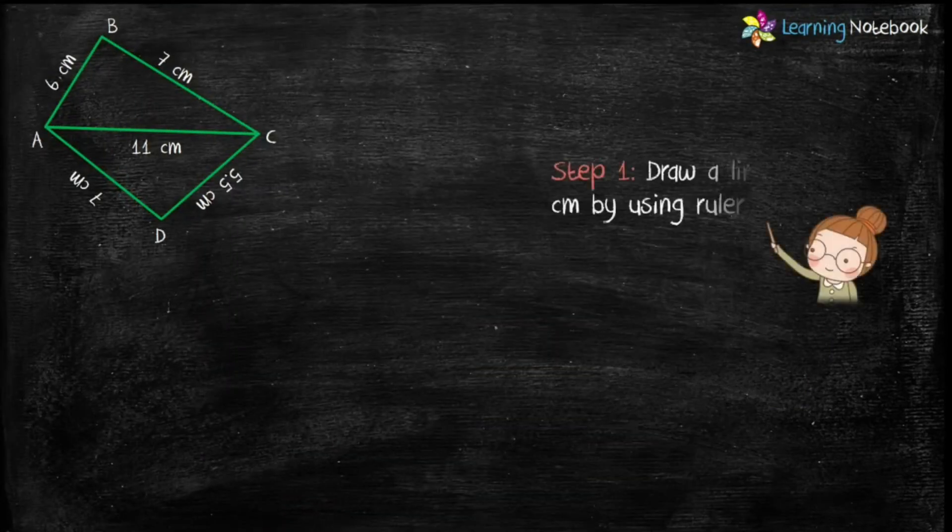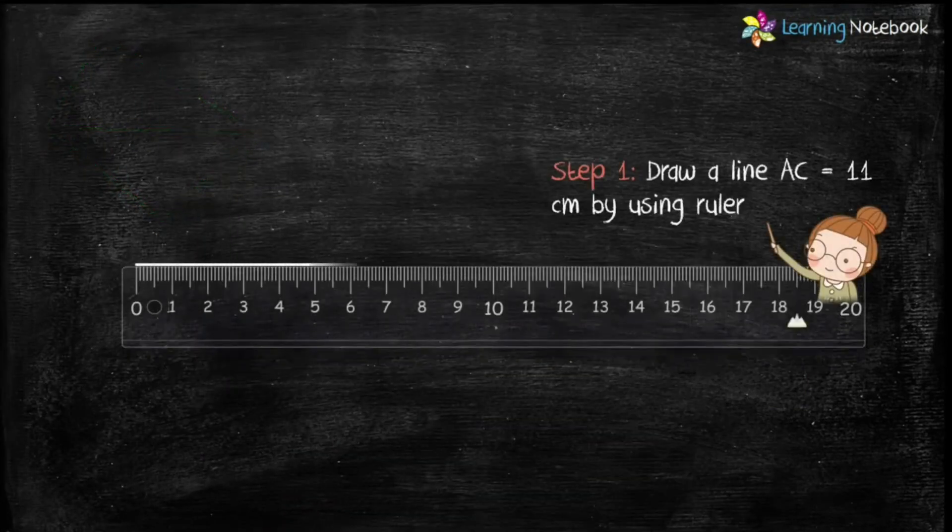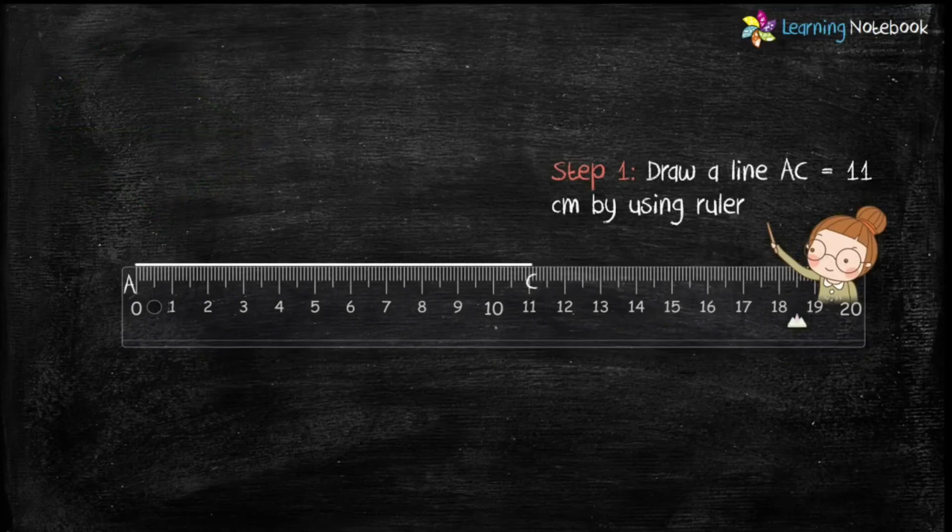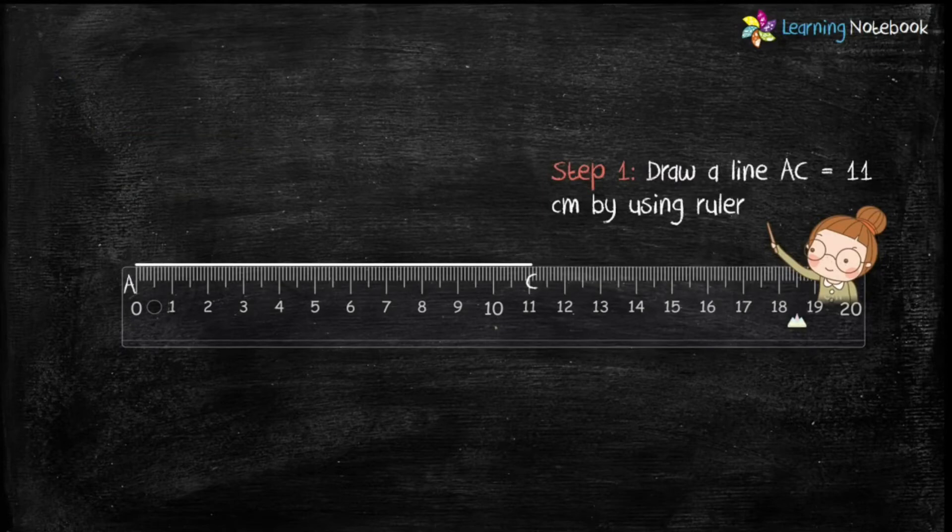So, let's start the construction by drawing the diagonal AC first. So, step 1 is, draw a line AC equals to 11 cm with the help of a ruler.